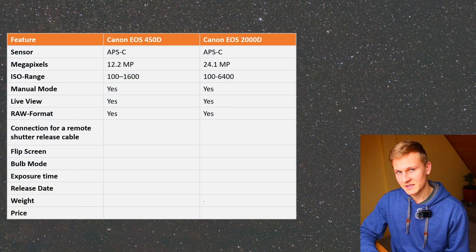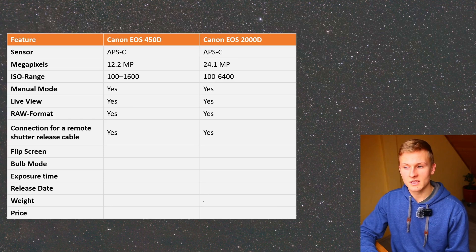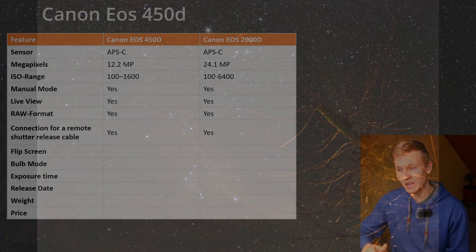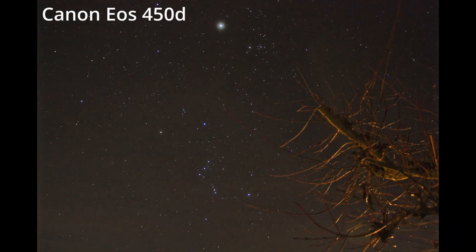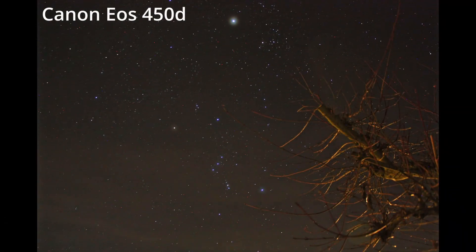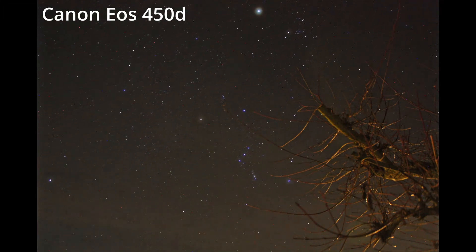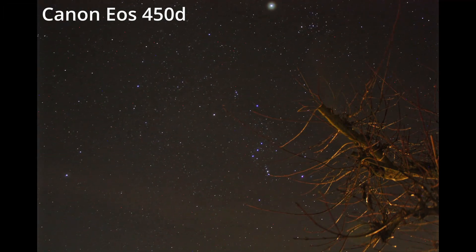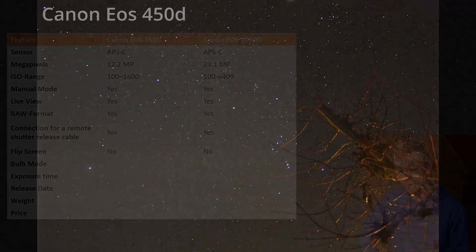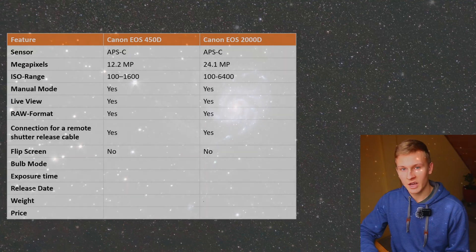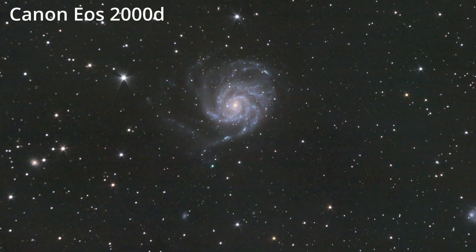The next aspect is a connection for a remote shutter release cable, which is very important. Without one, you need to click the camera manually to take images, causing your entire setup to move and resulting in less sharp images. The next aspect is a flip screen, which is also a very helpful feature. In this case, both cameras do not have a flip screen. If you are looking for the Canon EOS 600D, I have already compared that camera to other DSLRs — you can click on the video.